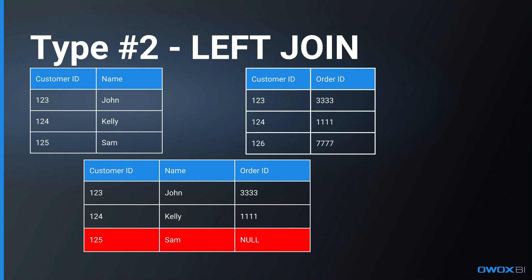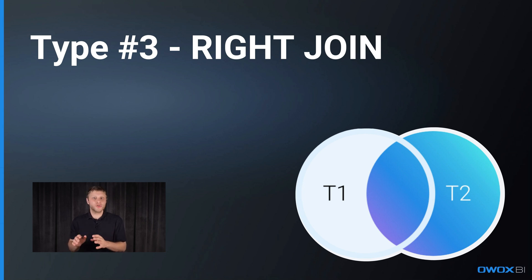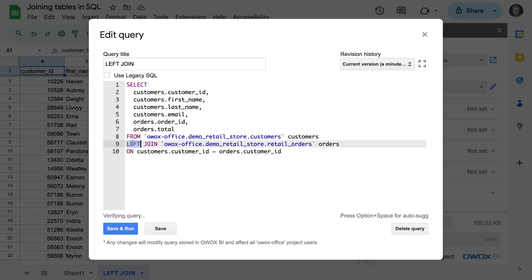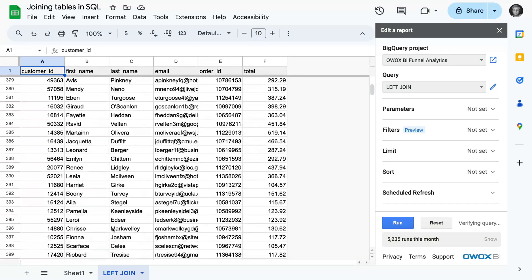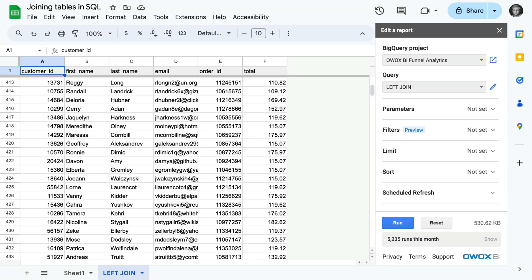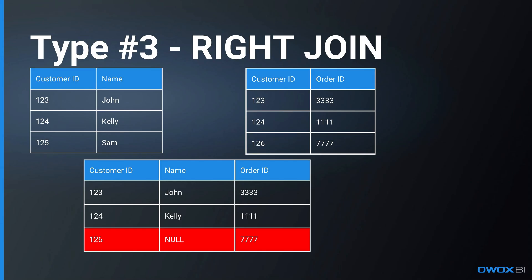Right Join works similarly to Left Join but in reverse, focusing on the right table. When using Right Join, you will see all entries from the right table, matched or not from the left one. The typical task is to assess which entries lack corresponding matches in another table. In our e-commerce example, when we run the same query but replace Left Join with Right Join, we'll have the full list of orders whether or not we have the customer specified in the customers table. We will see that order 7777 doesn't have any corresponding customer details from the customers table.